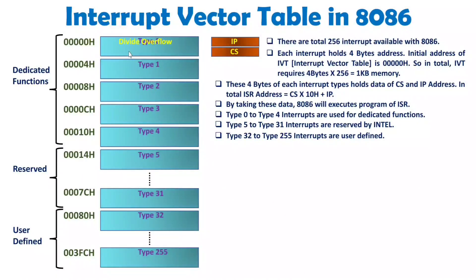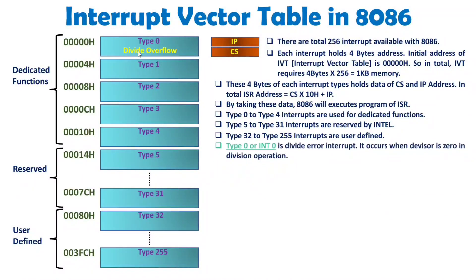Type 0 interrupt is the divide overflow interrupt, also referred to as INT 0. It is executed whenever a divide-by-zero instruction is executed. For example, when you execute the DIV instruction in 8086 and the divisor is 0, the answer is infinite and cannot be stored — a divide error occurs. Whenever this exception happens during DIV execution, this interrupt gets triggered.